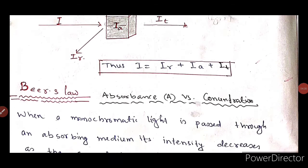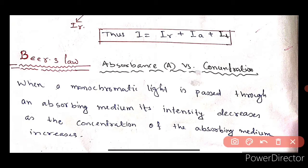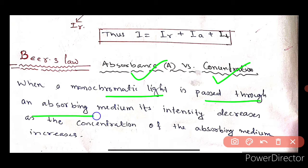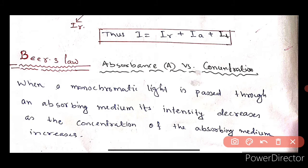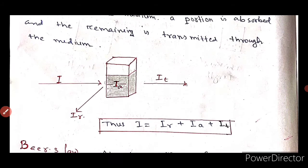Next point is Beer's law. Beer's law is totally dependent on absorbance and concentration. When monochromatic light is passed through an absorbing medium, its intensity decreases as the concentration of the absorbing medium increases. If concentration is increased, then the intensity of the light will decrease. This is Beer's law. Let's see the diagram and we will understand it properly.